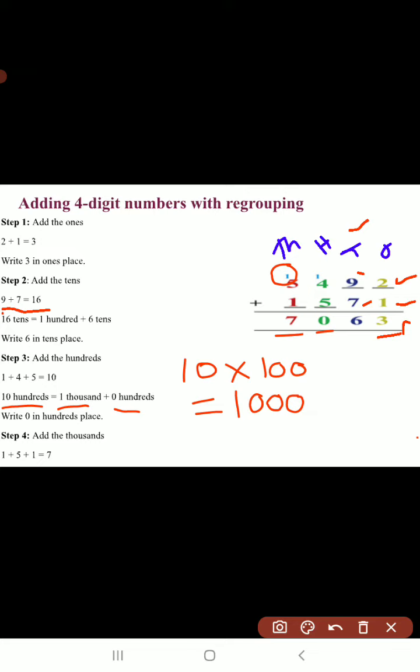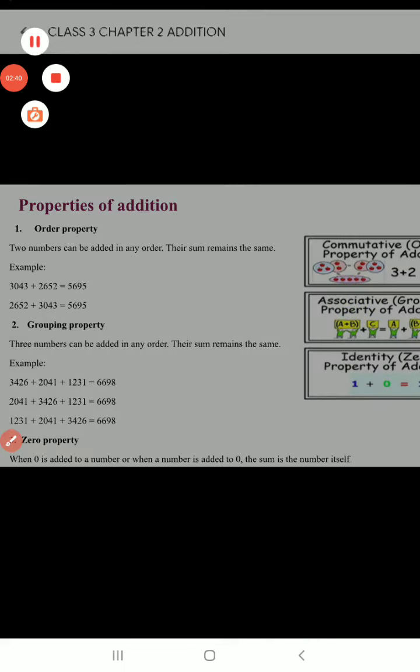Addition of 4-digit numbers with regrouping means addition of 4-digit numbers with carryover.